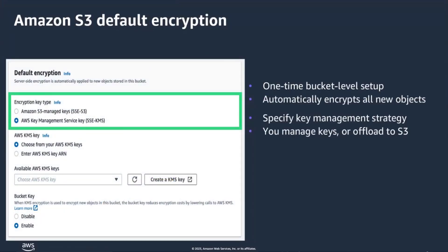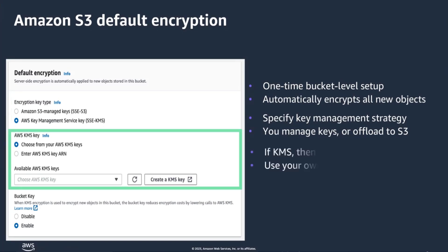AWS began encrypting all new objects uploaded to Amazon S3 by default in January 2023, automating a security best practice. If you want to use SSE-KMS with AWS managed keys or customer managed keys, the easiest way to enforce this behavior is through Amazon S3 default encryption on your buckets. This bucket-level setting allows you to set the default encryption behavior to your preferred server-side encryption mode.